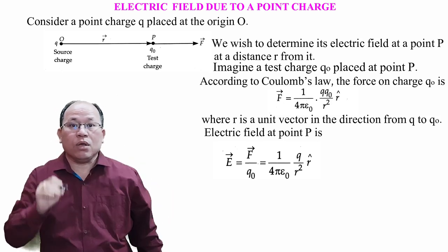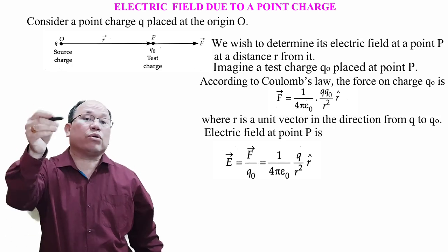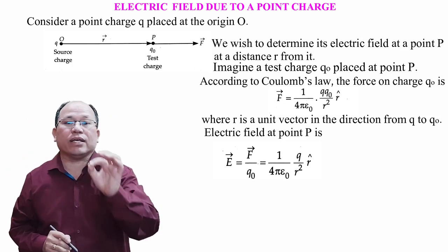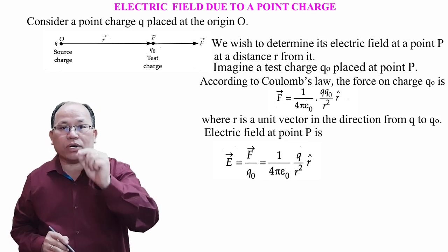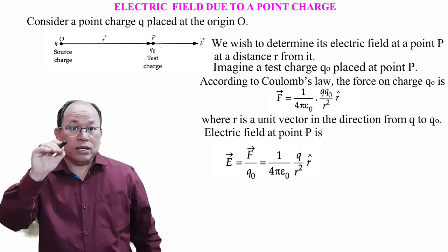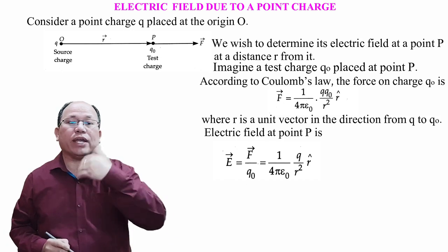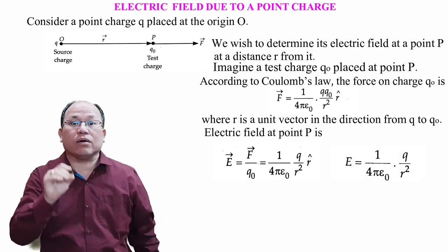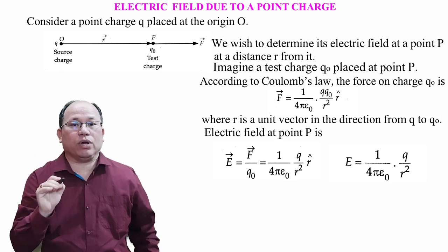Substituting, E vector equals 1/(4πε₀) · Q·q₀/r² · r̂, divided by q₀. The q₀ cancels, giving E vector equal to 1/(4πε₀) · Q/r² · r̂. In vector form that is the result. In magnitude: E = 1/(4πε₀) · Q/r².